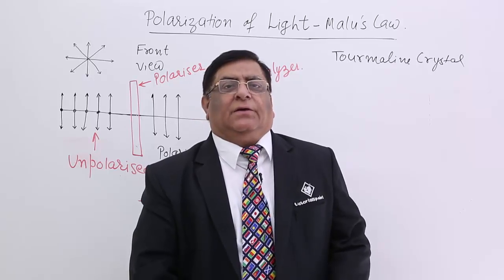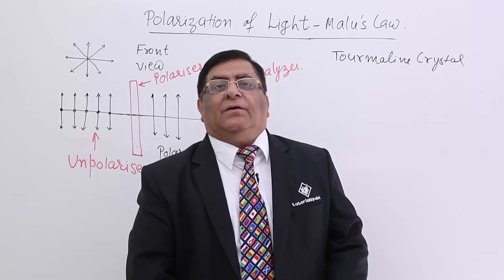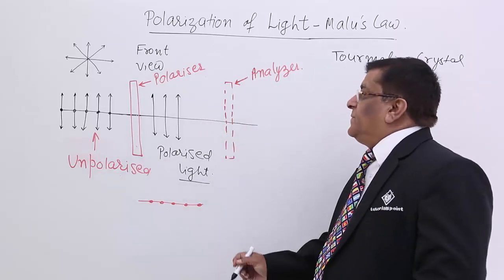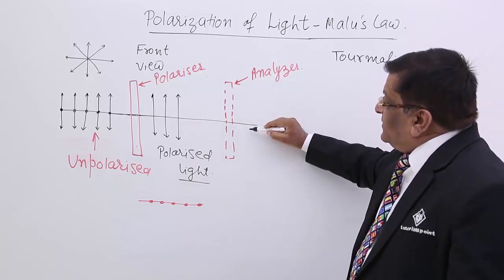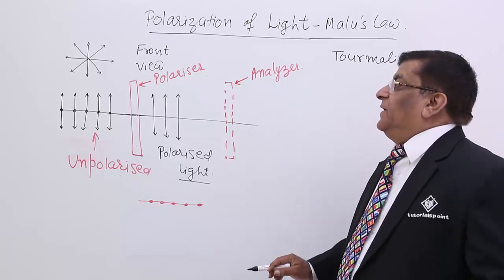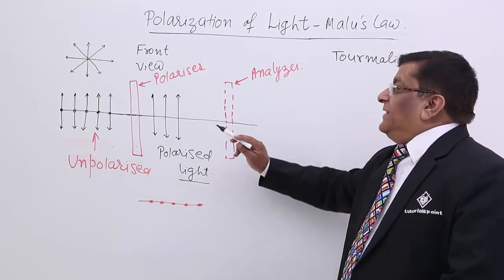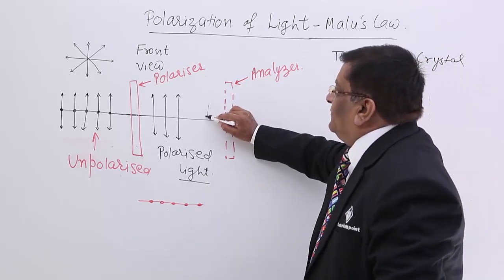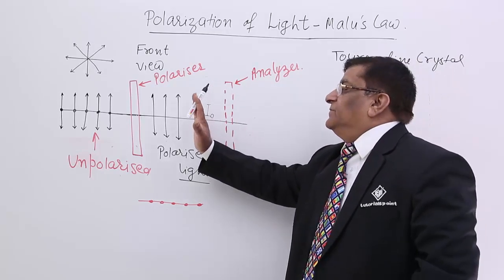In this lecture we will study polarized light. After that, if we place an analyzer, the light becomes polarized and we see certain light here. The intensity from the polarizer to the analyzer becomes half. Let us say we start from here and this intensity is I₀, and this is the analyzer before this light.